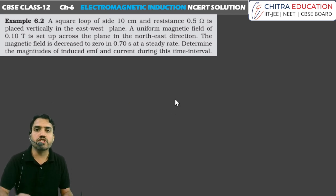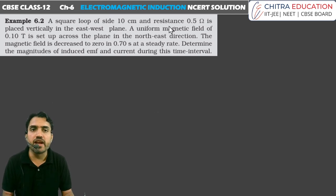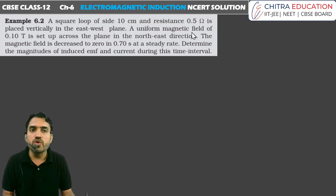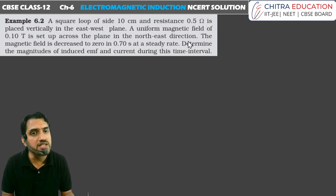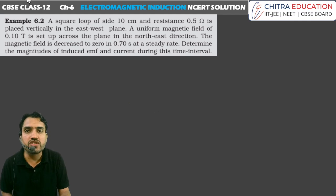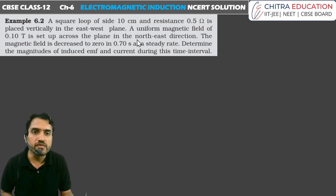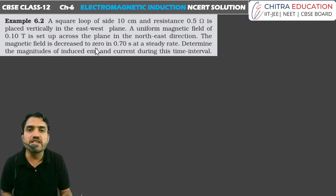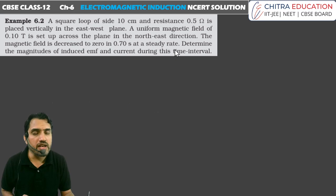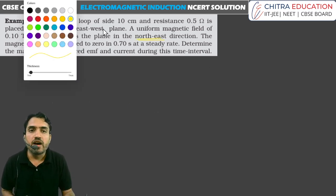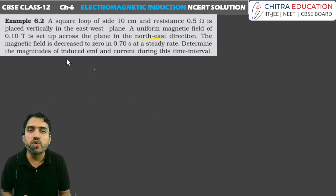We have example 6.2. A square loop of side 10 cm and resistance 0.5 ohm is placed vertically in the east-west plane. A uniform magnetic field of 0.10 tesla is set up across the plane in the north-east direction. The magnetic field is decreased to 0 in 0.7 seconds at a steady rate. Determine the magnitude of induced EMF and current during the time interval.